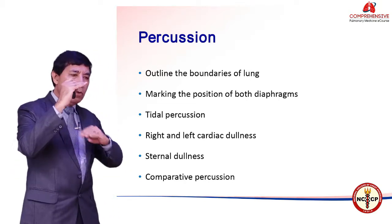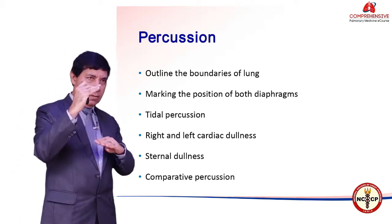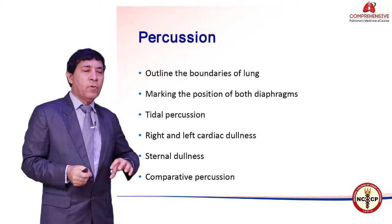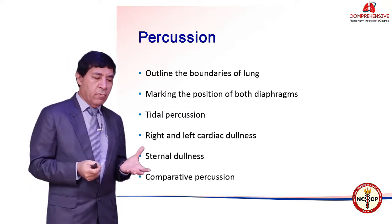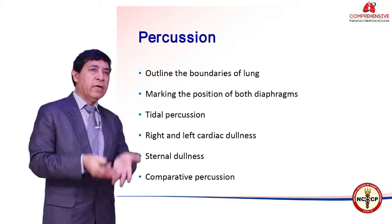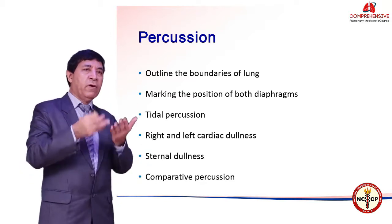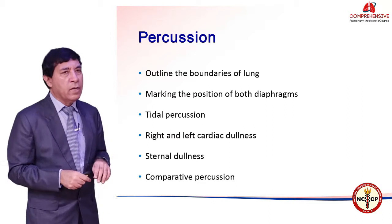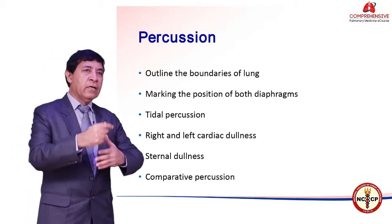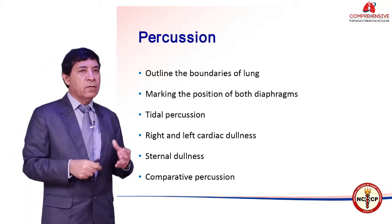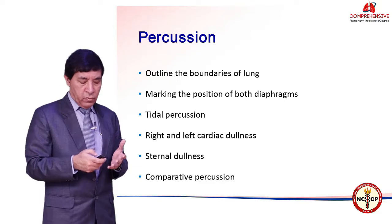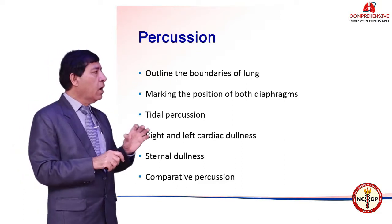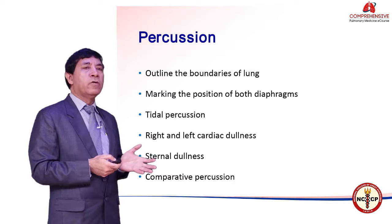It is first very important to mark the boundaries of the lung. Otherwise, suppose there is a volume loss, if there is a collapse, the diaphragm has gone up, the liver will go up on that side — then you will be only percussing on the liver and maybe falsely telling that the lower part of the lung is dull.